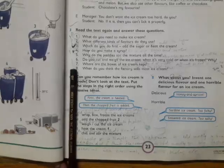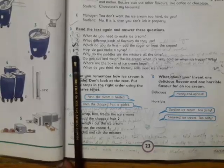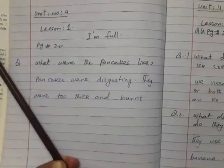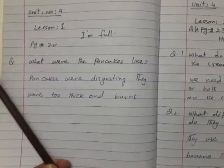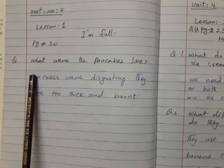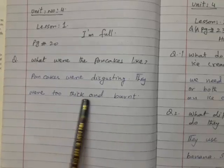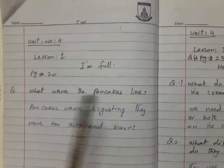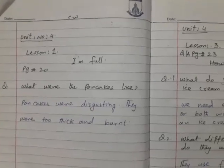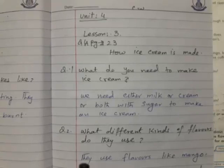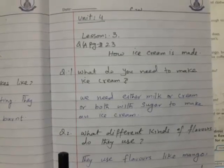Now question answers, but before coming to these question and answers I will give you the answer of the first question which was on page 20 when the unit was started. The question was what were the pancakes like? The answer is pancakes were disgusting, they were too thick and burnt. You have to prepare the page as I have previously told. Then come to the questions which I am going to show you. These question and answers are on page 23.